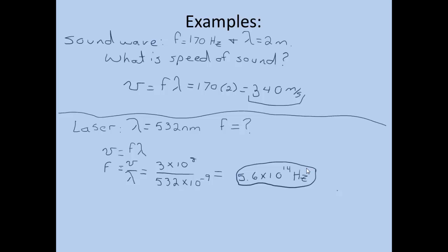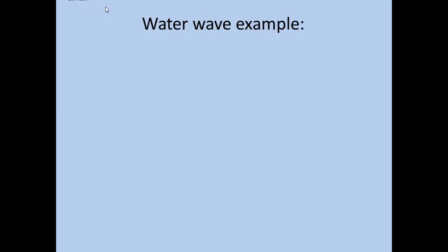Let's look at an example of a water wave. We're watching water waves hit the shore at a beach. And you notice that 10 waves are hitting per minute. You also notice that the wave fronts are about 15 meters apart. In other words, the wave is hitting, and then 15 meters behind it is the next one.